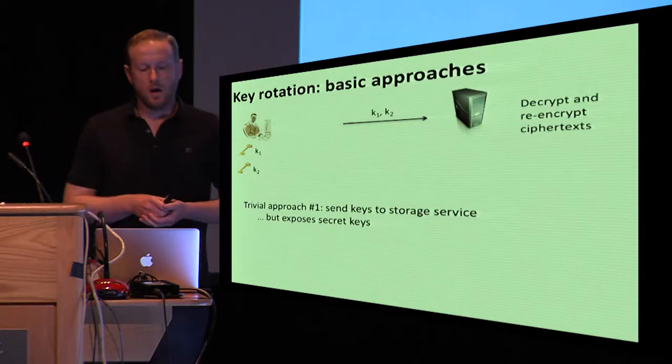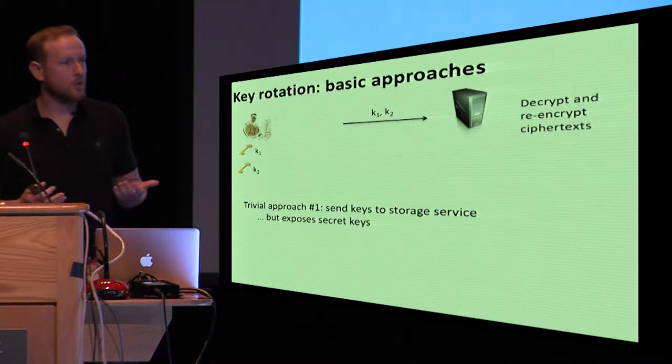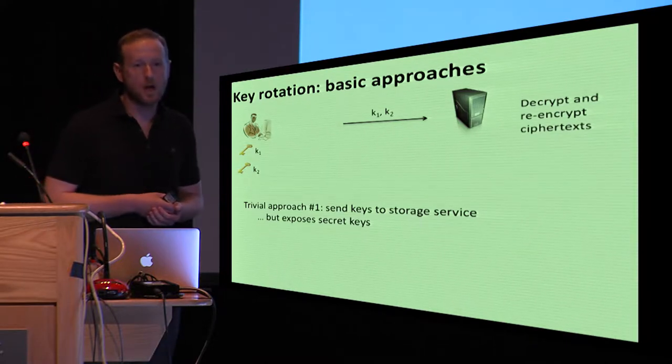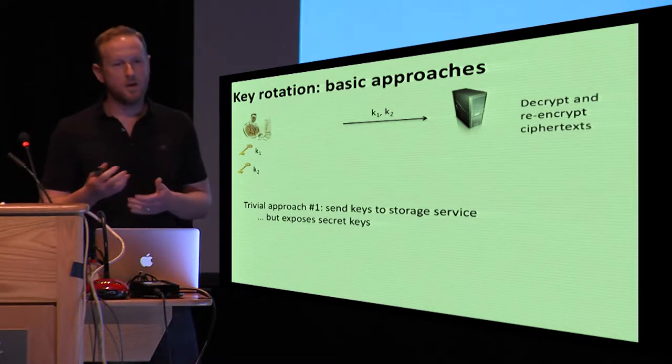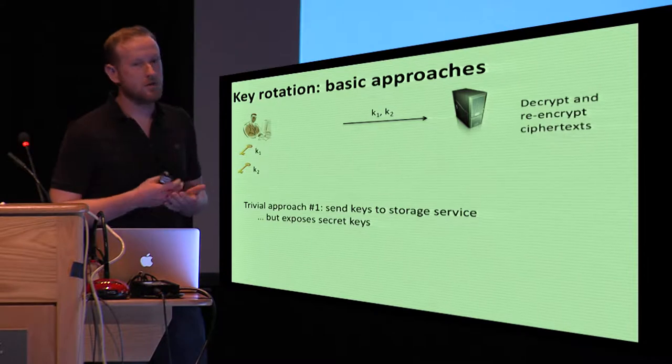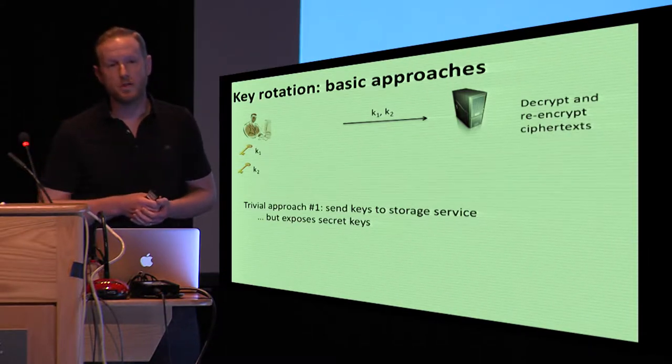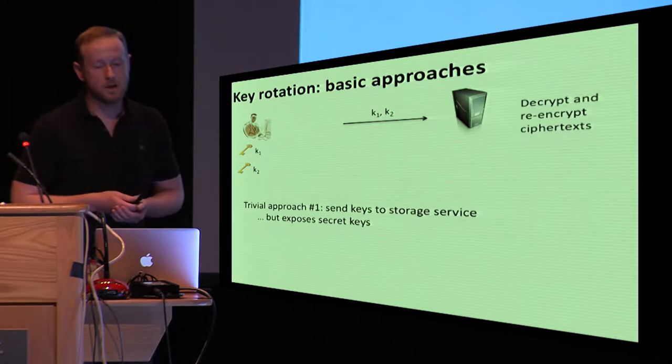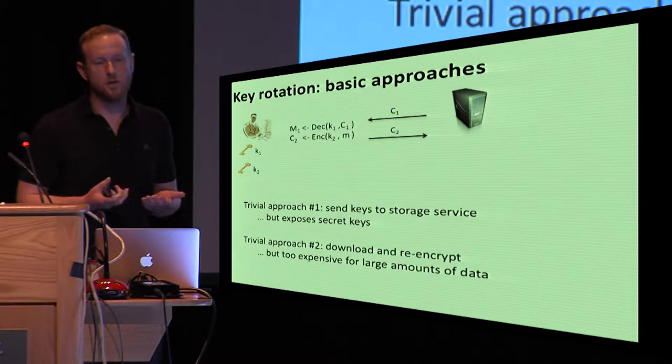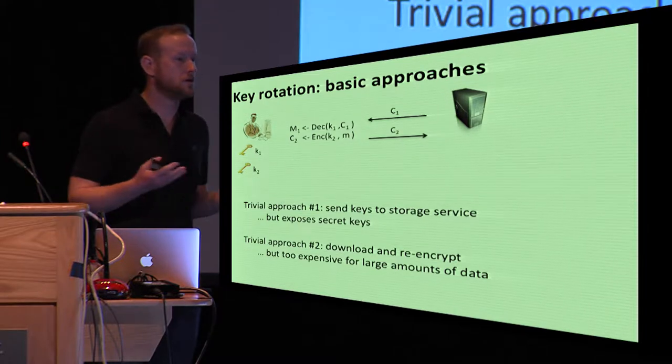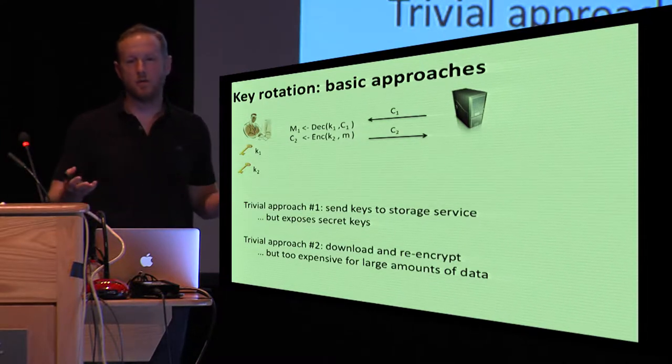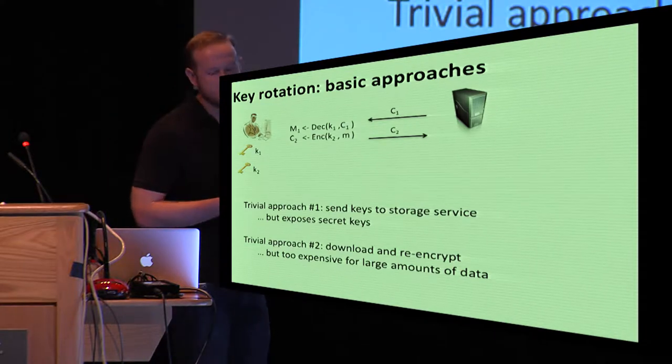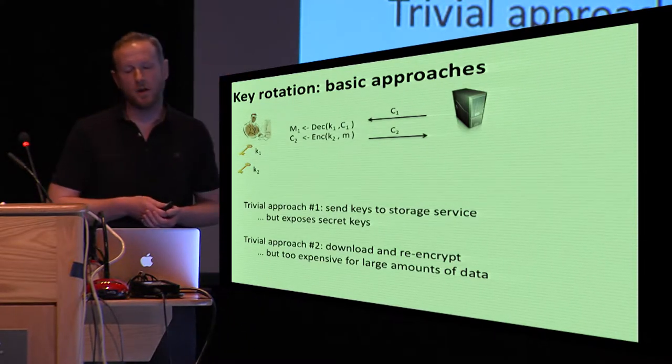So how do we do key rotation? Well, there's a couple obvious but unsatisfying approaches. The first and most obvious is just to send both keys K1 and K2 up to the storage service. They can decrypt and re-encrypt stuff. This isn't satisfying because obviously we've exposed the keys to a location where we would not like it to be exposed. Second trivial approach is just download all the ciphertext and do the re-encryption locally on the client. But there's this obvious performance concern that if you have large amounts of data, say terabytes of data, this is going to be prohibitively expensive in terms of performance.